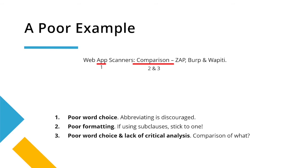In this poor example, there are three aspects to discuss. The title is 'Web App Scanners Comparison: Zap, Burp and Wapiti.' The word choice is fine. However, abbreviations are discouraged, especially in this case — 'app' is more commonly used to describe phone applications, so you may mislead the reader, as you might actually be talking about WordPress.